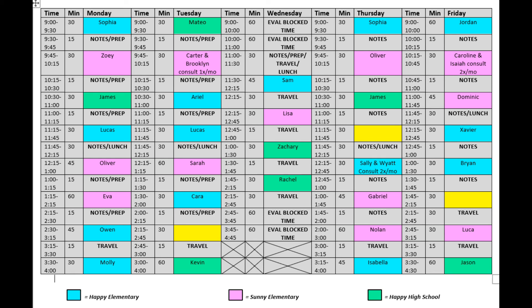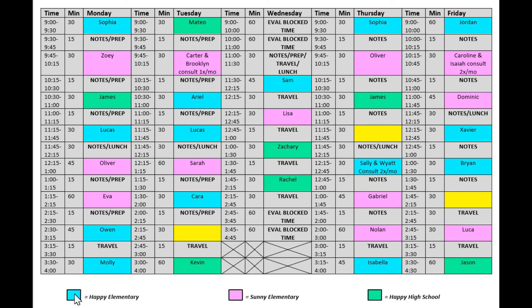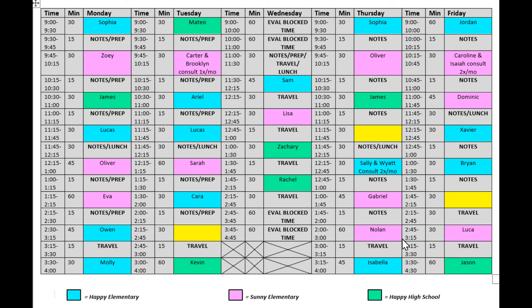Color-coding helps with general organization and also for documentation purposes. Down here I have a little key for the different types of schools — again, these are fictional school names. Happy Elementary School is Aqua, Sunny Elementary School is Pink, and Happy High School is Green. All of my students are color-coded up here depending on what school they go to.